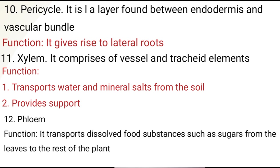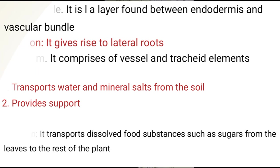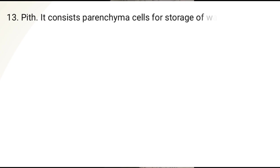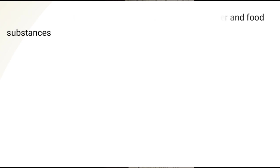Number twelve, phloem. It transports dissolved food substances such as sugars from the leaves to the rest of the plant. Number thirteen, pith. It contains parenchyma tissues that provide storage of food and water.